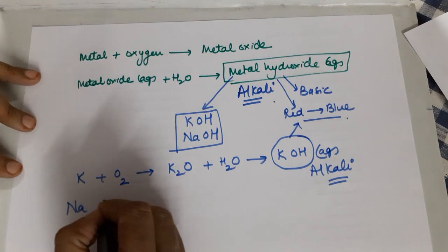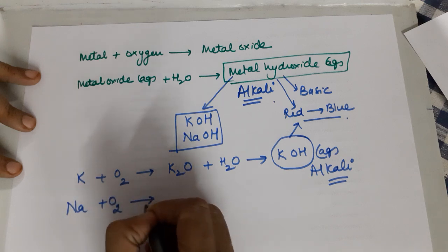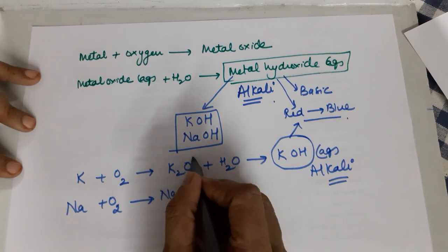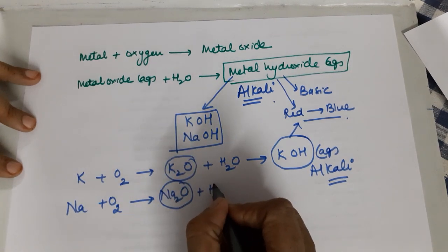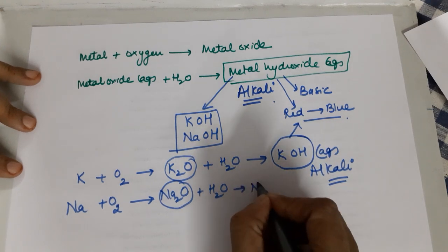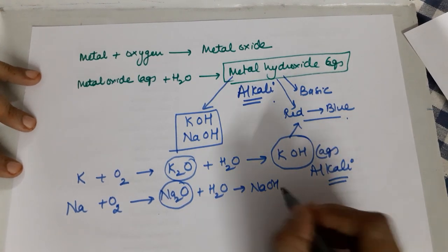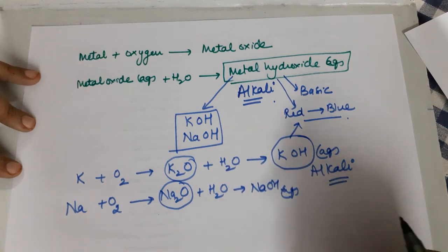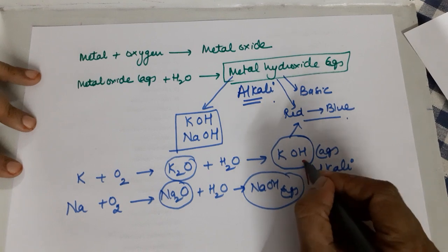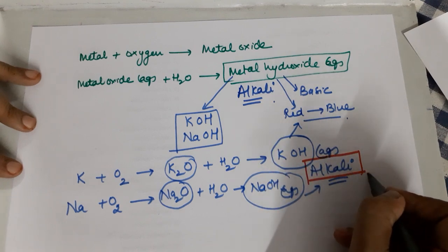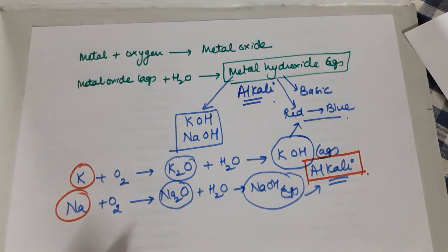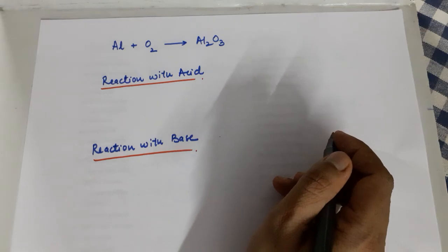The same is true for sodium. Sodium combines violently with oxygen leading to the formation of sodium oxide, which quickly reacts with moisture in the air to form NaOH. NaOH is highly soluble in water and is basic, so it is also called an alkali. The two metals you should know that form alkalis are potassium and sodium.